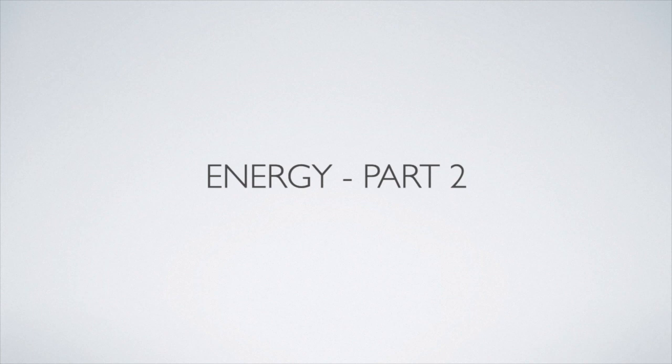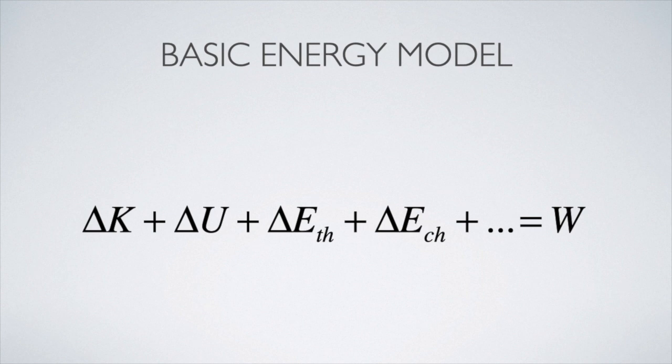Today we're going to talk about the second part of our conservation of energy lesson. Let's start by reviewing the basic energy model as an equation. If the system is isolated and there's no work being done by the environment or on the environment, then the total energy of the system remains constant. If it's not completely isolated, then the change in energy of the system is equal to the work done by or on the environment.